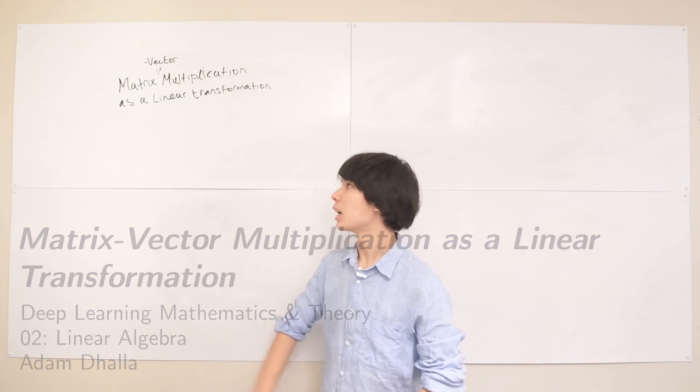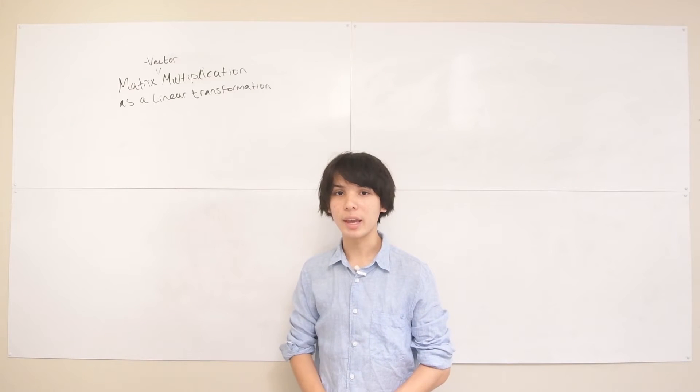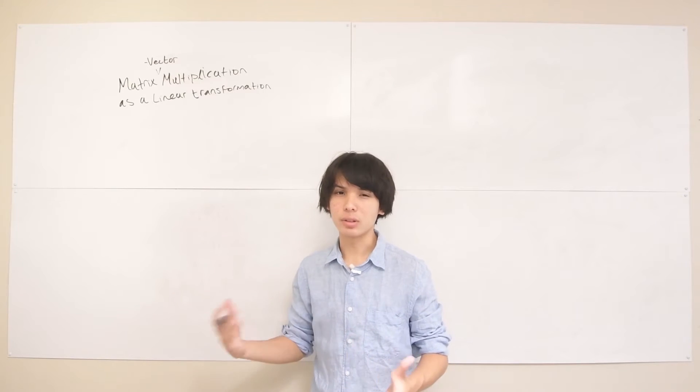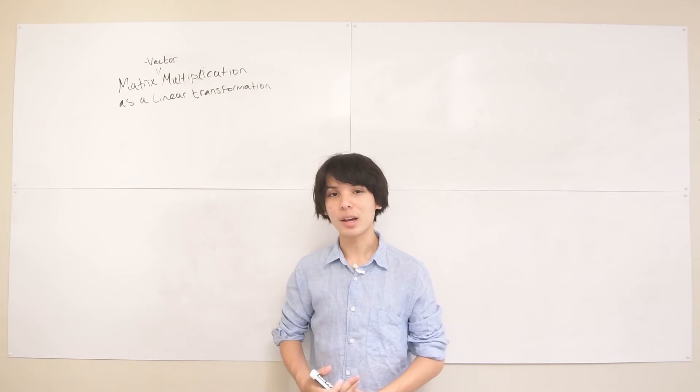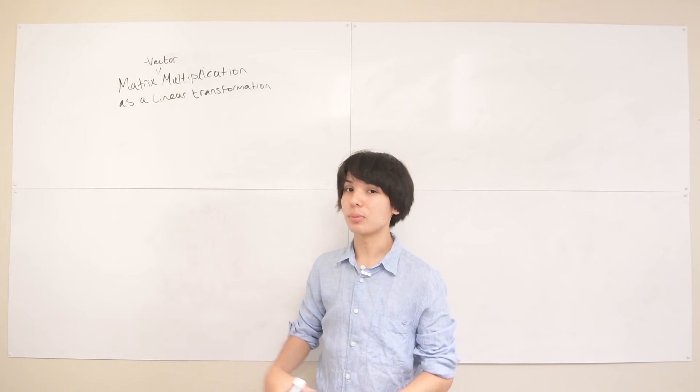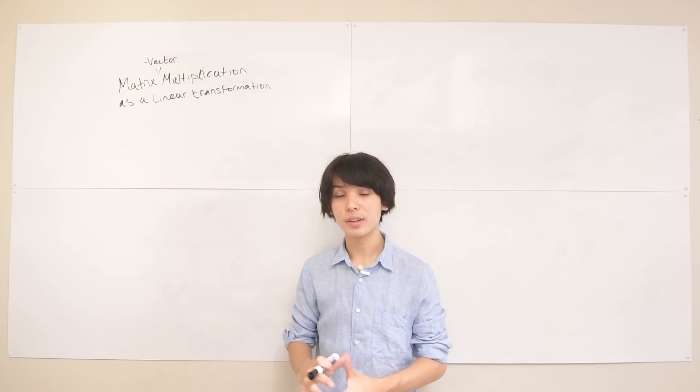Hi, in this lecture I want to see how we can view matrix-vector multiplication as a linear transformation, or how we can use matrix-vector multiplication as a function that takes in some vector and then transfers it to some other point in Cartesian space.